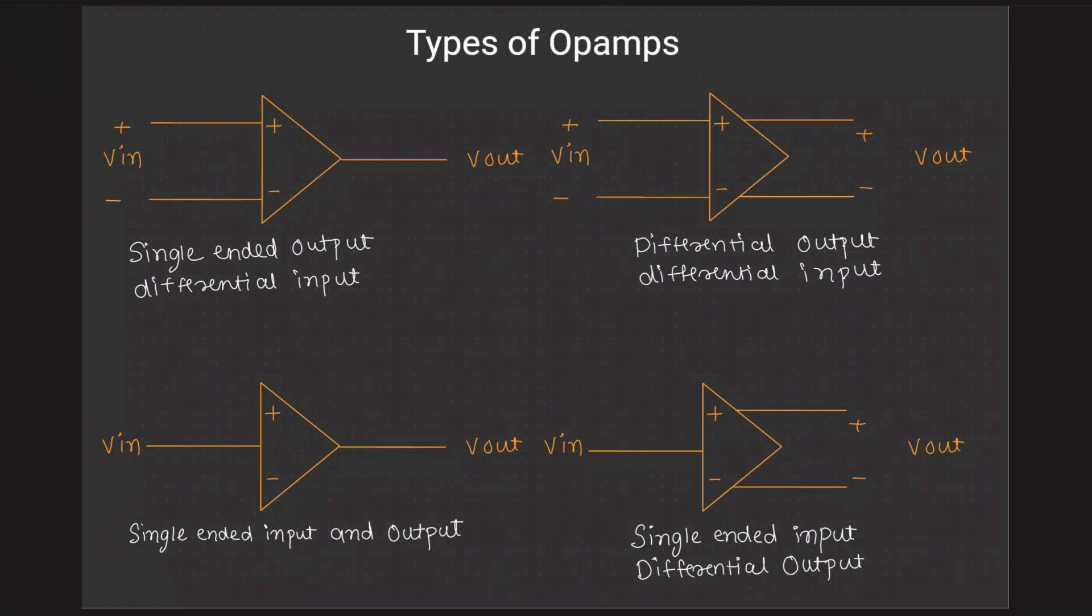The third type is single-ended input and single-ended output. We just have a Vin and Vout. And same, single-ended input and differential output. This type of op-amp is used when we have a single-ended input and we want the output to be differential output.